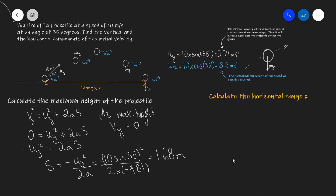Additionally, let's calculate the horizontal range of the projectile. This is the horizontal distance between the point where the projectile is fired and the point at which it lands on the ground. To calculate the horizontal range, we can use the fact that the horizontal velocity remains perfectly constant, which we've already calculated as 10 cos 35°, which is 8.2 meters per second. So we can simply use the fact that distance equals speed times time: x = u_x × t. We already know the horizontal speed, but we don't know the time — let's figure it out.